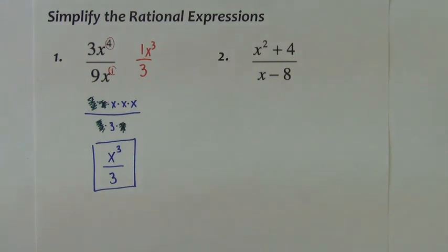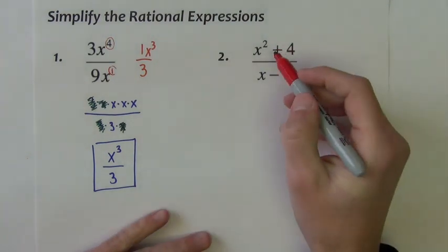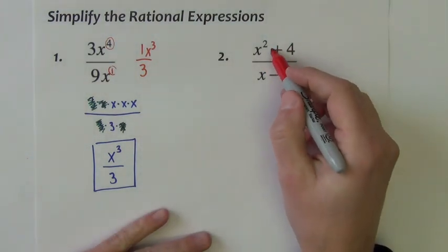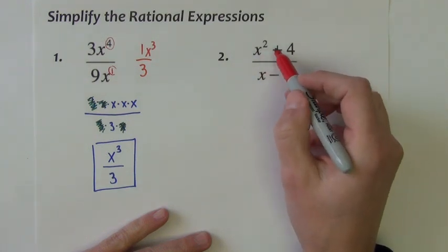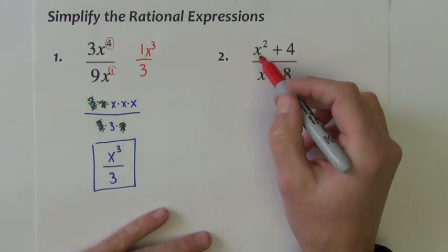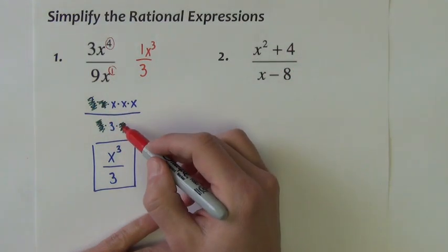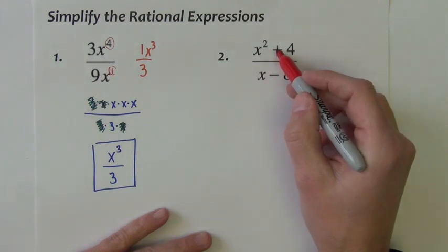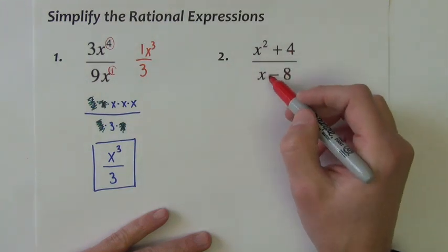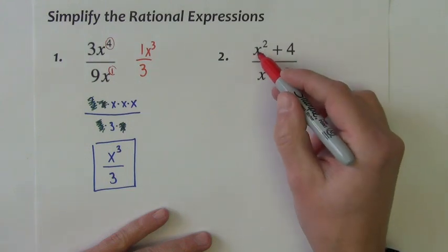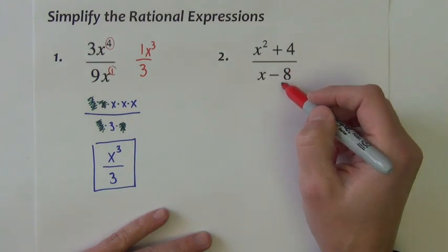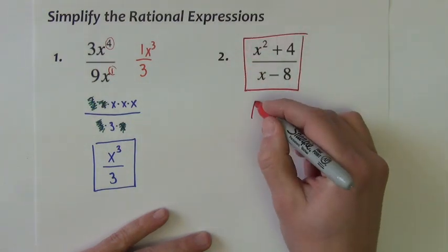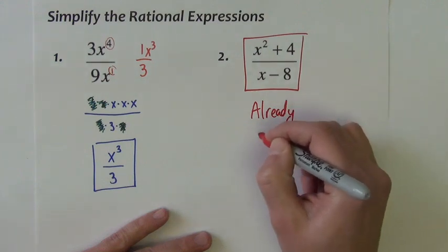The second problem here is an illustration of what you cannot do. You cannot rewrite a sum as a product, and you cannot rewrite a difference as a product. These quantities are not factors — factors multiply together. If they're not factors, we cannot cancel common factors. In other words, I cannot divide out the x's or reduce 4 over 8 to one half. In fact, this expression is already simplified.